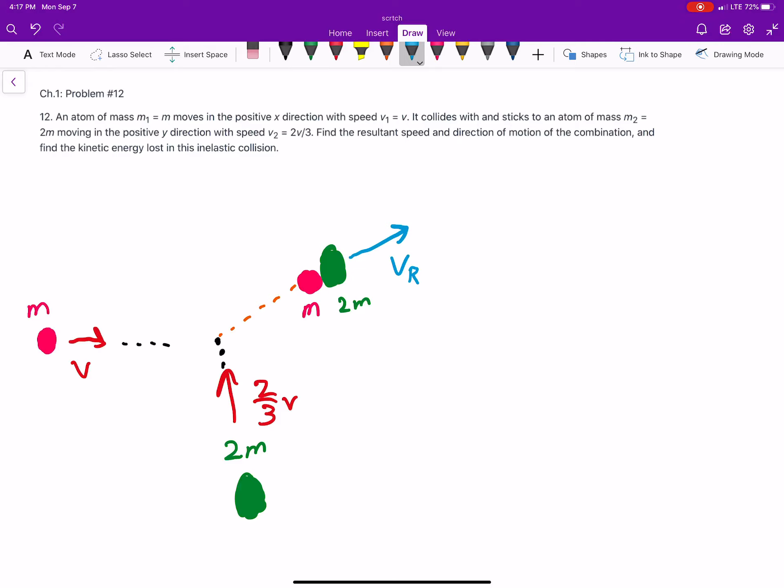It says an atom of mass m in the positive x direction with speed v. So that's the pink one. Collides and sticks with an atom of mass 2m. That's the green one. That's moving in the positive y direction.